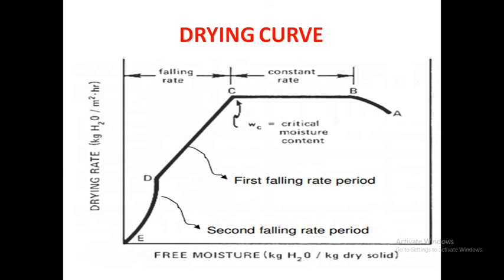B to C of the curve is known as constant rate period. Represents removal of unbound water from the product. The water acts as if the solid is not present, only presence of water. And the water activity is equal to 1.